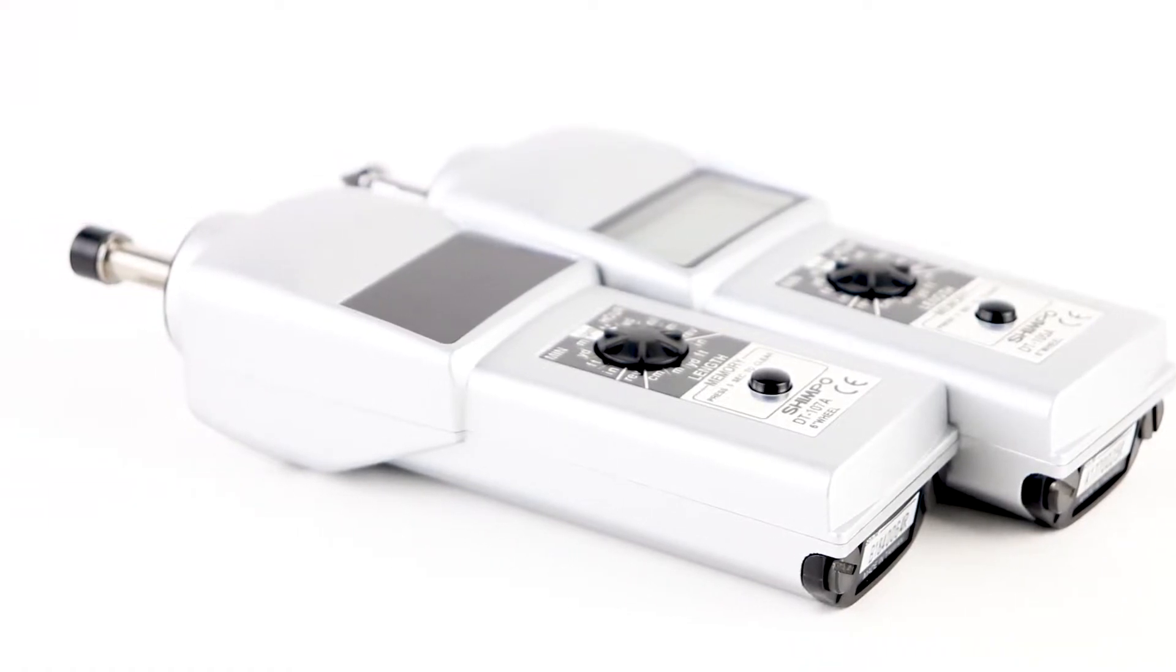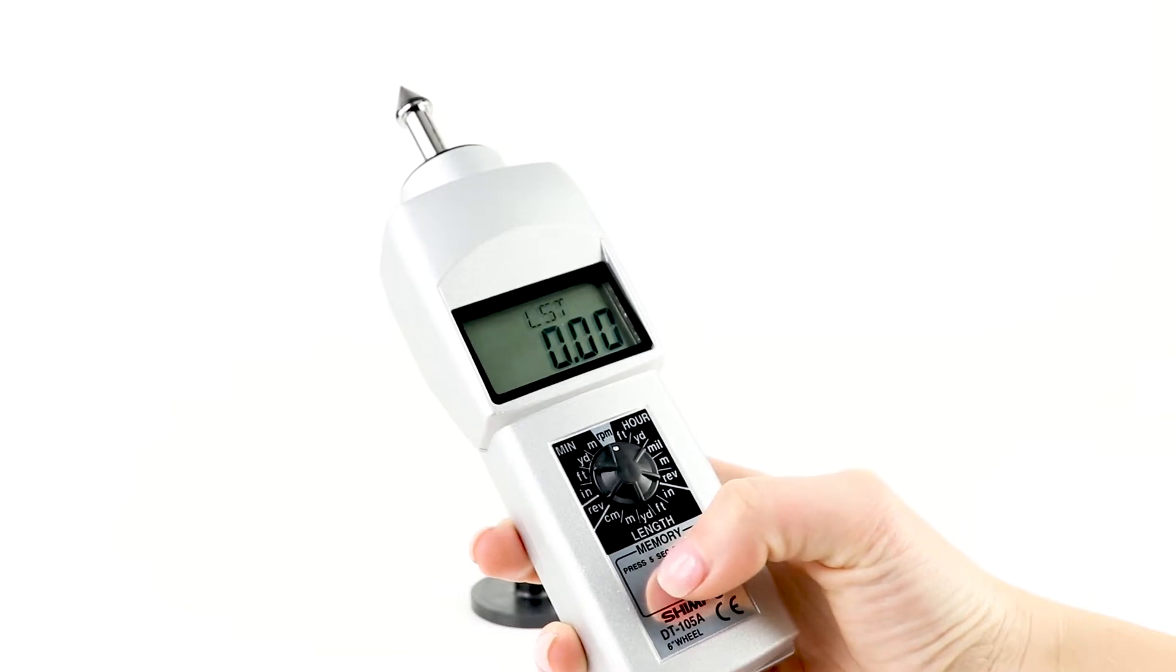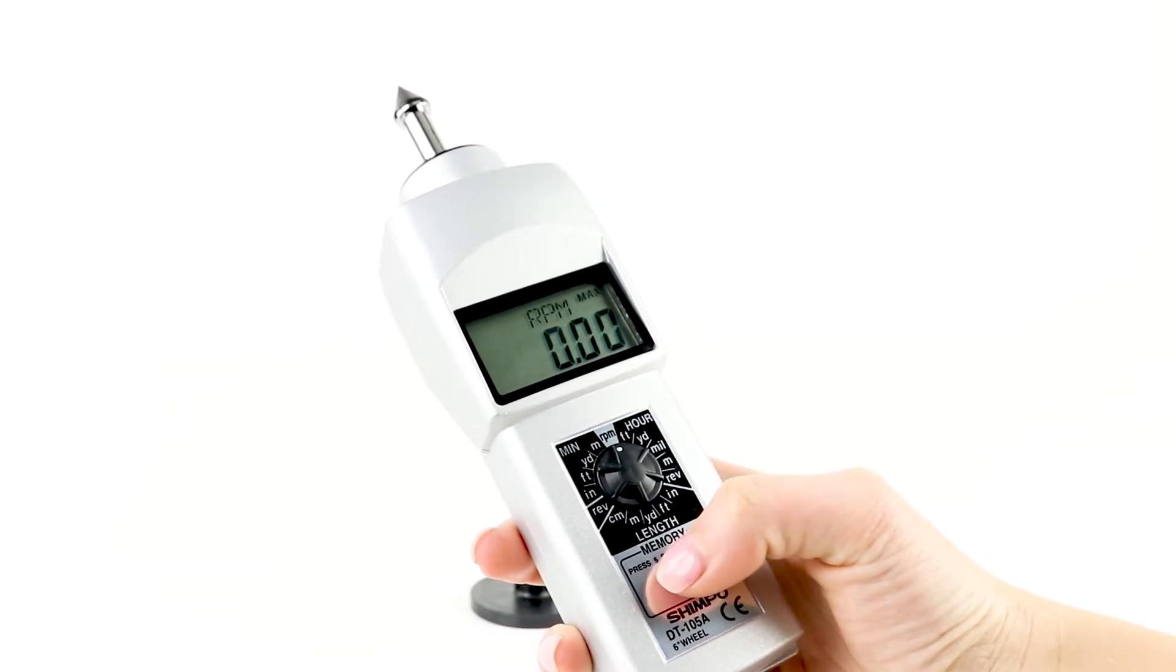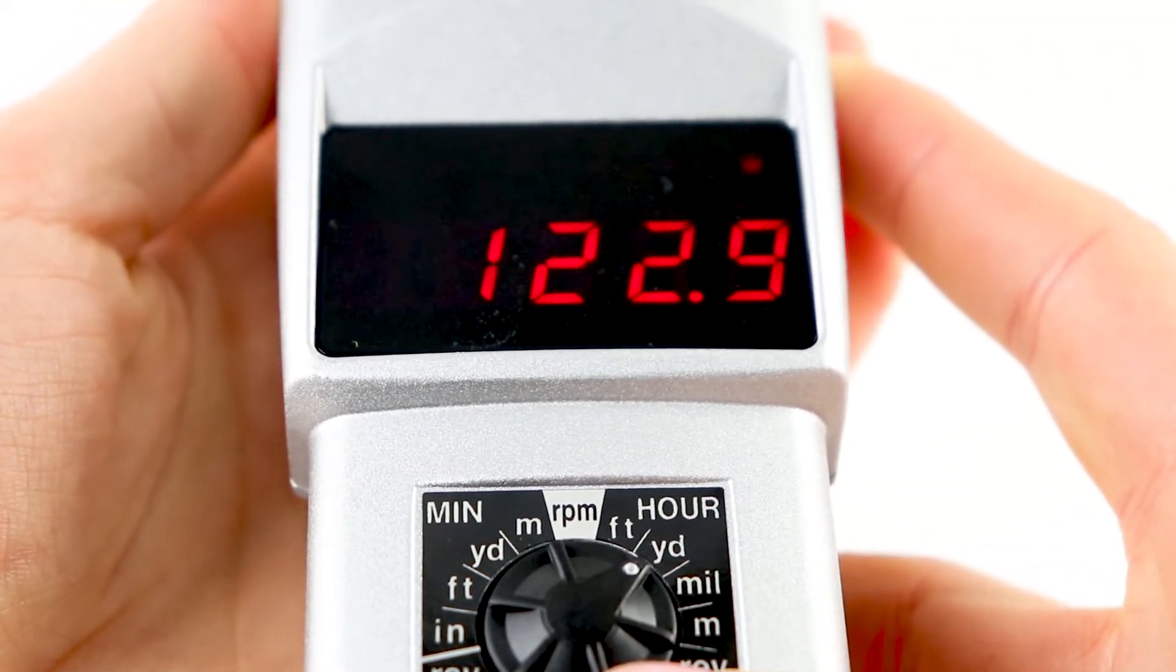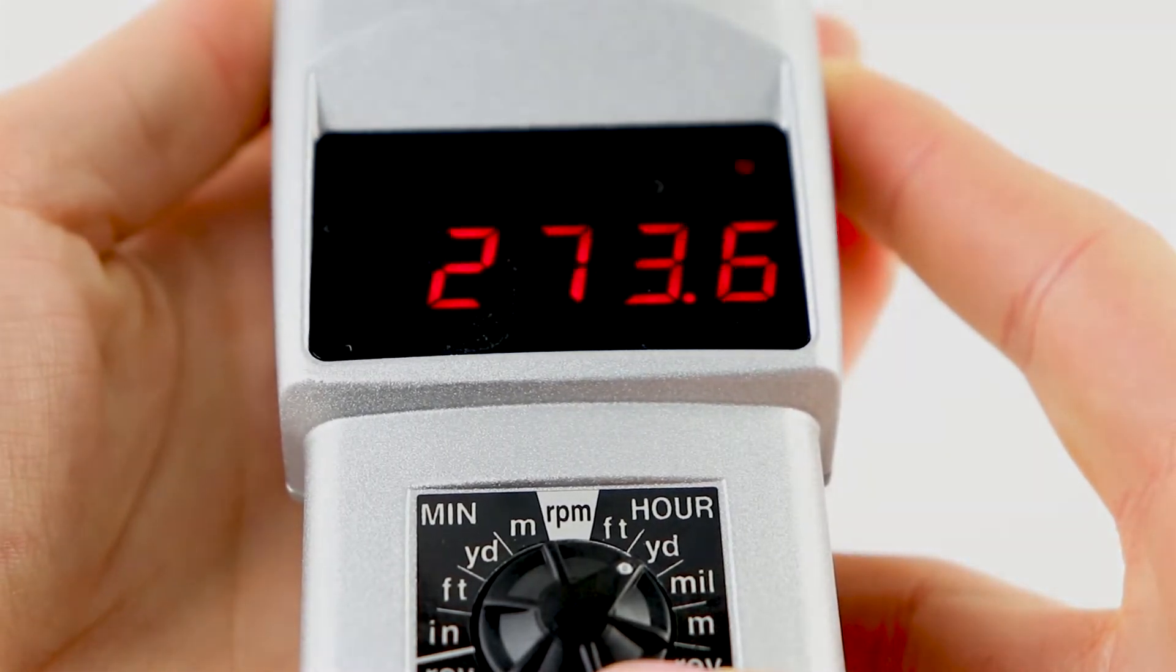The only difference between the two models is that the 105A model uses an LCD display, which is better suited for use in bright lighting conditions, while the 107A model uses an LED display that is better suited for poorly lit or dark environments.